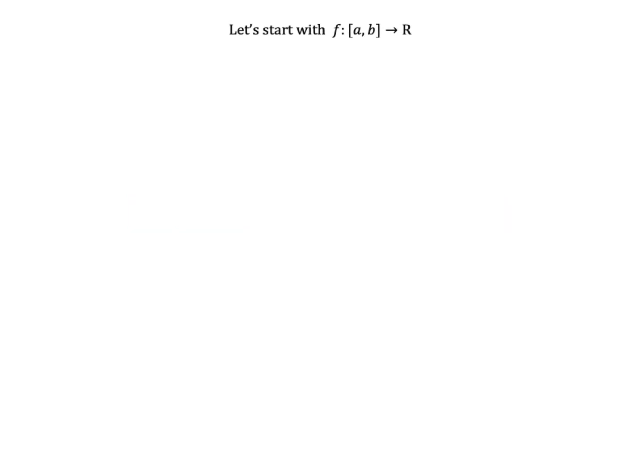Let's start then with a real value function f over a closed interval from a to b. The graph of the function could then look something like this. Our interest is then to find the shaded area under the curve between a and b.